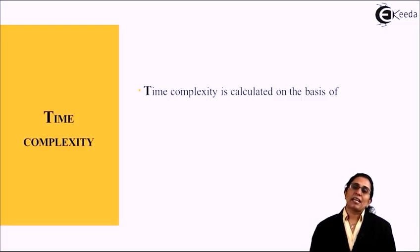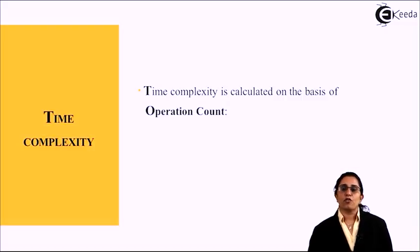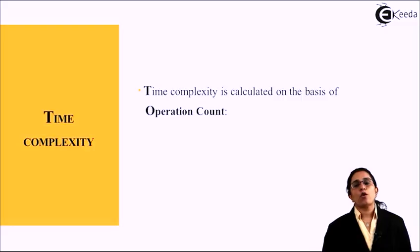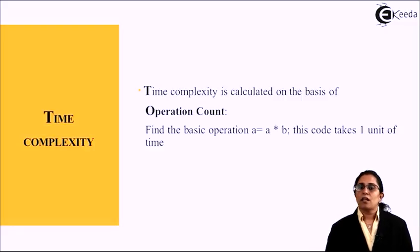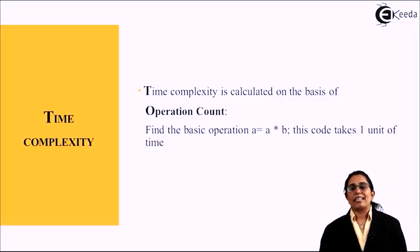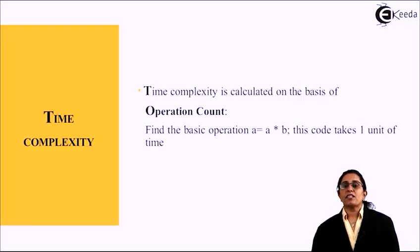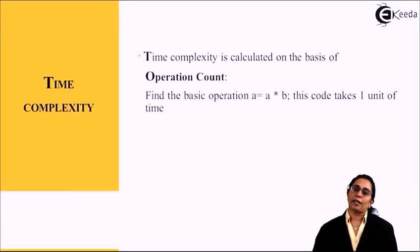Time complexity is calculated on the basis of, first, operation count - the number of operations. Find the basic operation such as a = a * b. This code takes one unit of time.